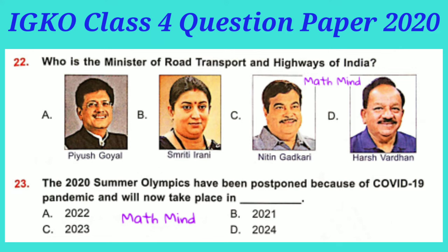Question No. 22: Who is the Minister of Road Transport and Highways of India? Option C is correct: Nitin Gadkari, from Maharashtra. Option B, Smriti Irani, is Minister of Women and Child Development. Option A, Piyush Goyal, is Minister of Textiles, Commerce and Industry, and Consumer Affairs. Option D, Harsh Vardhan, was Minister of Health and Family Welfare and Science and Technology from 30 May 2019 to 7 July 2021.